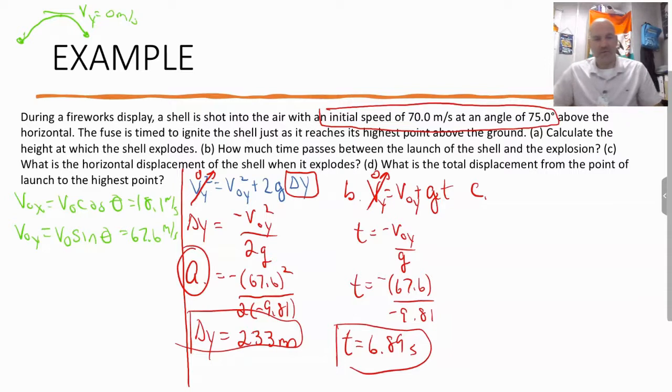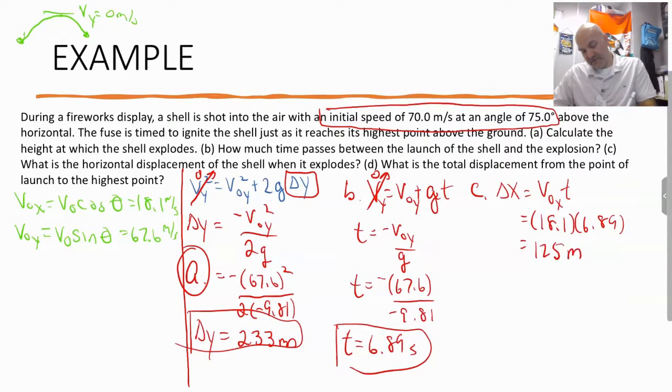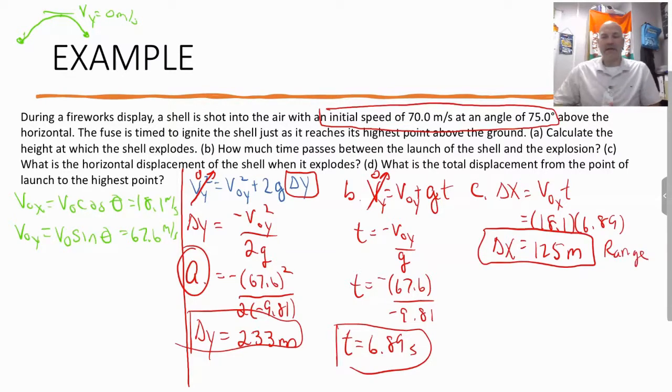Now, c is going to be what is the horizontal displacement. Well, that's just going to be delta x equal to vox t. So we're going to take 18.1 and multiply it by 6.89. And that's going to give us our horizontal displacement of 125 meters. Sometimes this will be referred to as the range, especially if it's the full path.